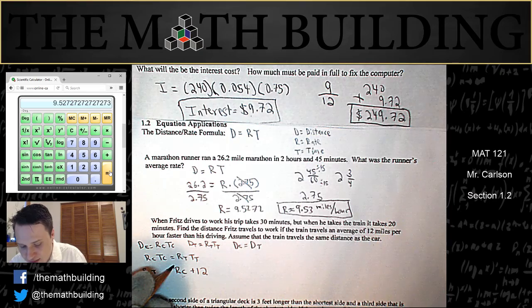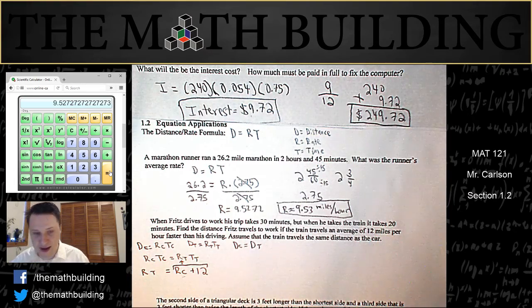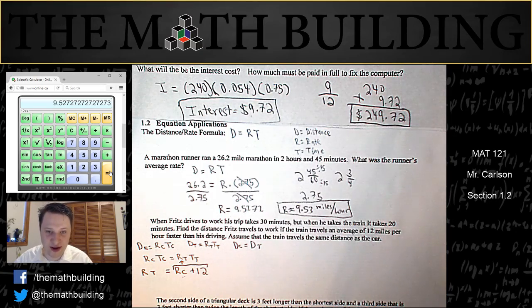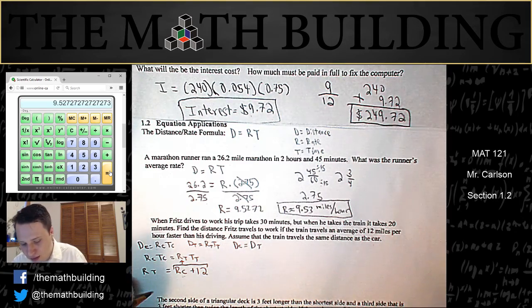So now that I know that the rate of the train is equal to rc plus 12, I can substitute this amount into that variable right here. I can substitute rc plus 12 and trade it out for rt because they're equal to each other. They're the same amount.